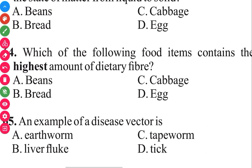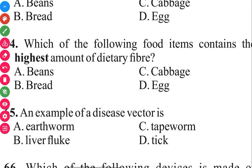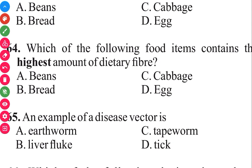Question 65. An example of a disease vector is tick. The answer in 3, 2, 1 is D, tick.